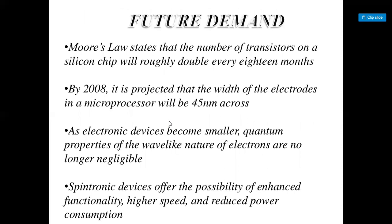Moore's Law states that the number of transistors on a silicon chip will roughly double every 18 months. By 2008, it was projected that the width of the electrodes in a microprocessor would be 45 nanometers across. As electronic devices become smaller, quantum properties such as the wave-like nature of electrons are no longer negligible. Spintronic devices offer the possibility of enhanced functionality, higher speed, and reduced power consumption.